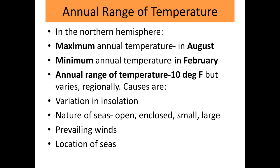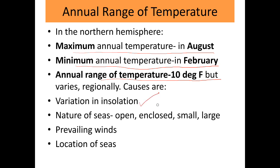Annual range of temperature: in the Northern Hemisphere, maximum annual temperature is measured in August and minimum in February. The annual range of temperature is 10 degrees Fahrenheit, but it varies regionally. The causes include variation in insolation — in low latitude regions insolation received is more, whereas in high latitudes or polar regions insolation is less.